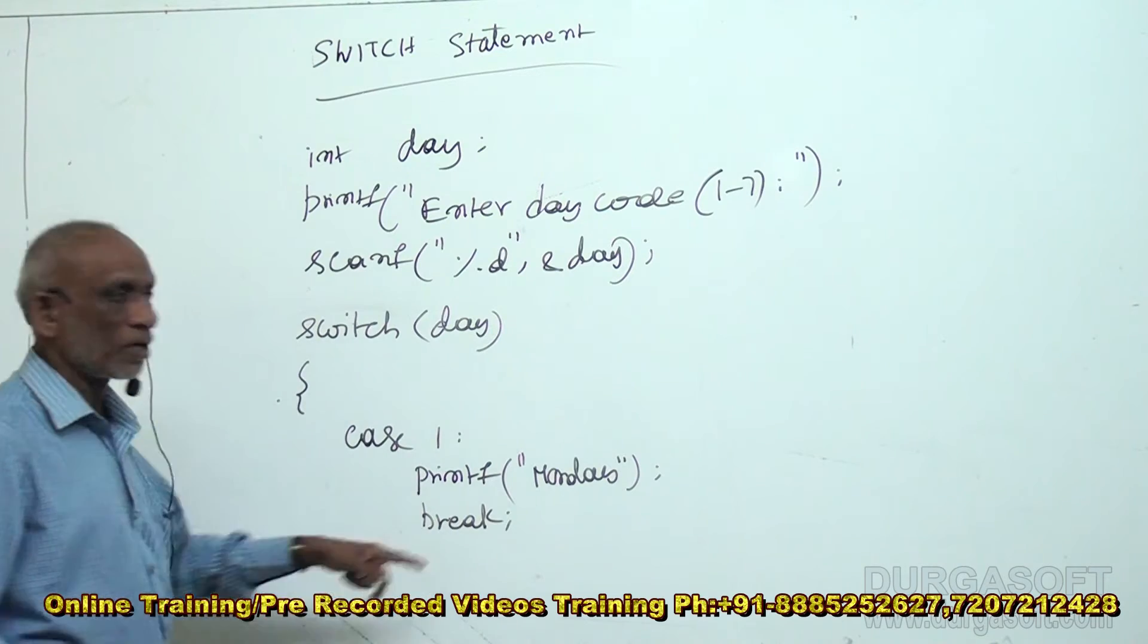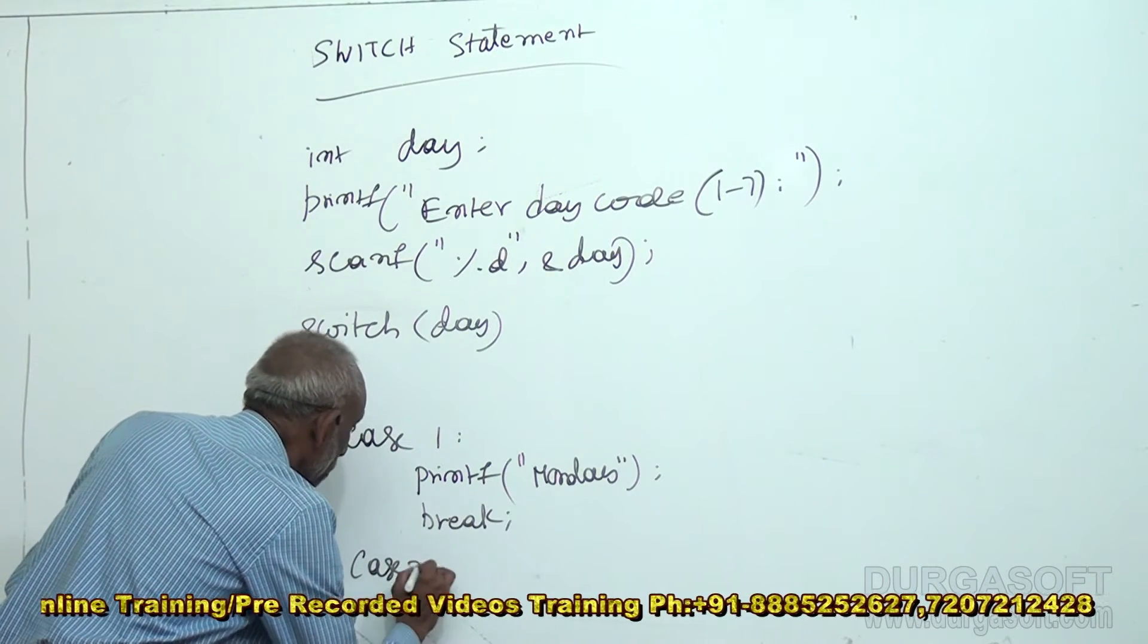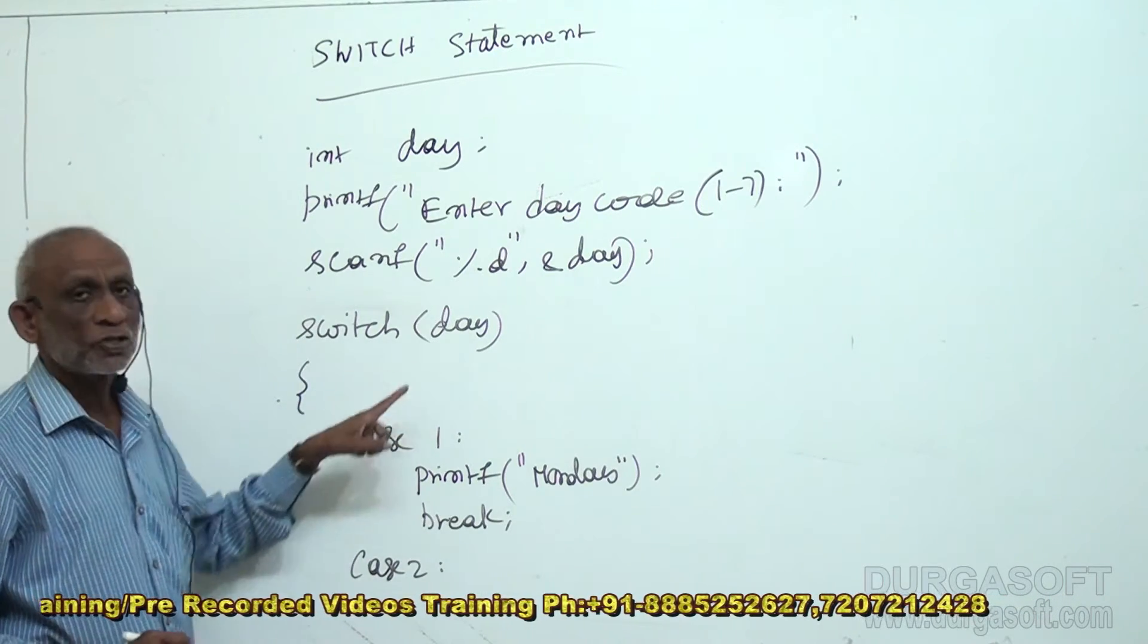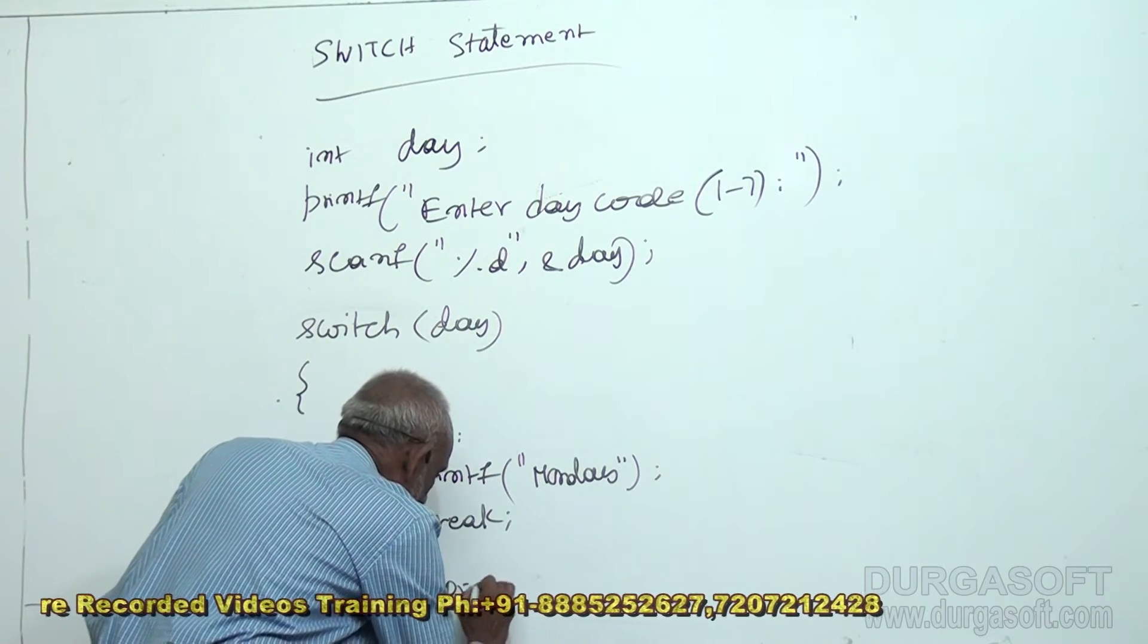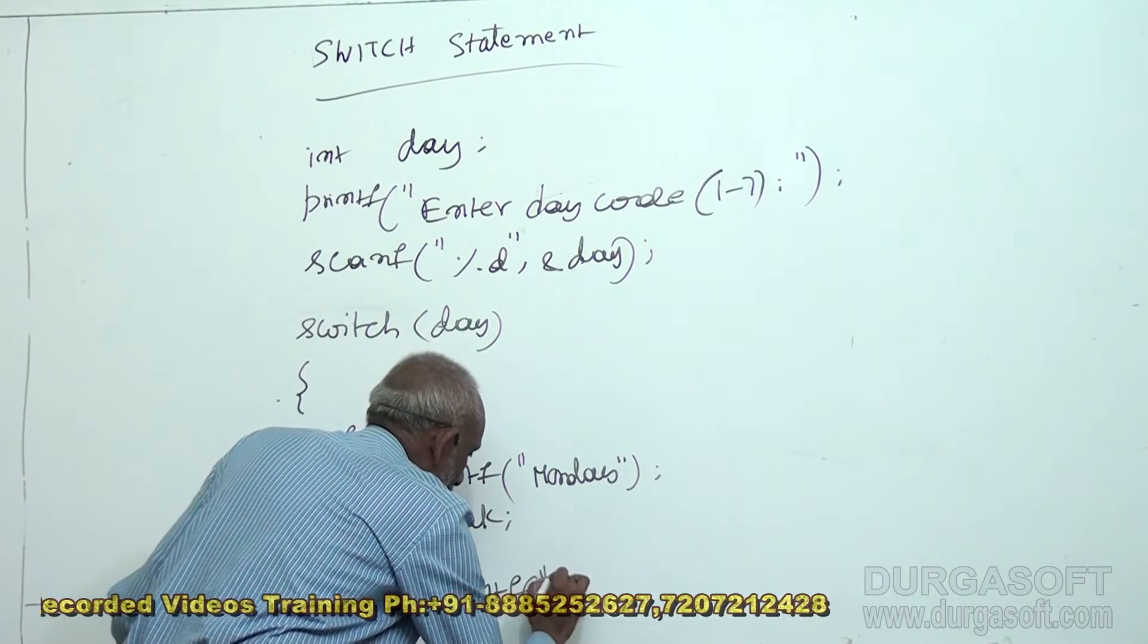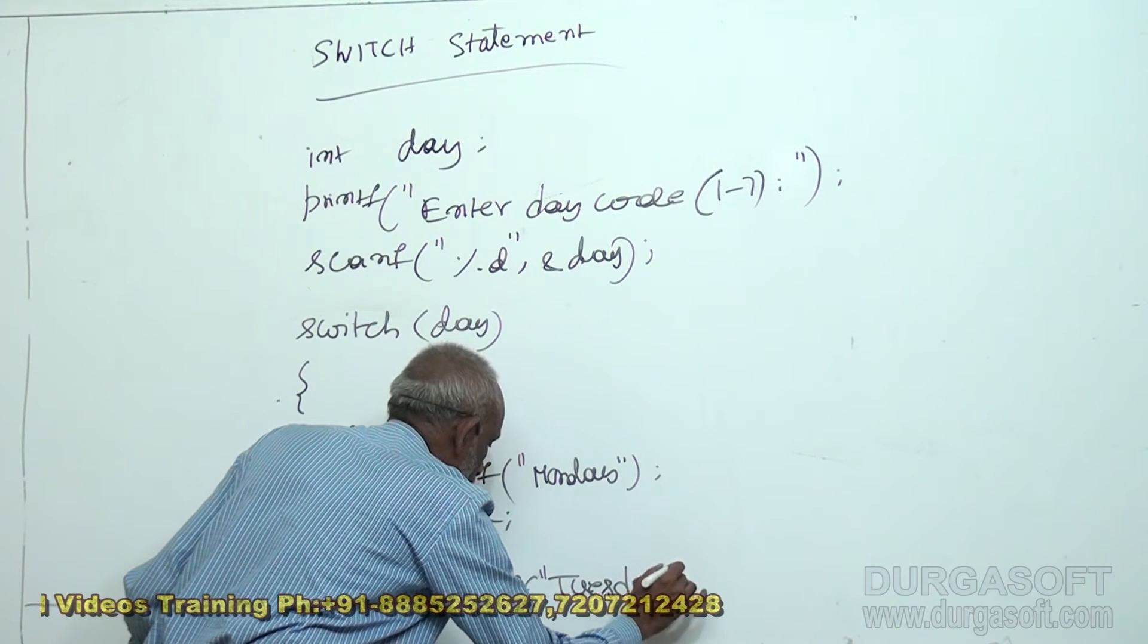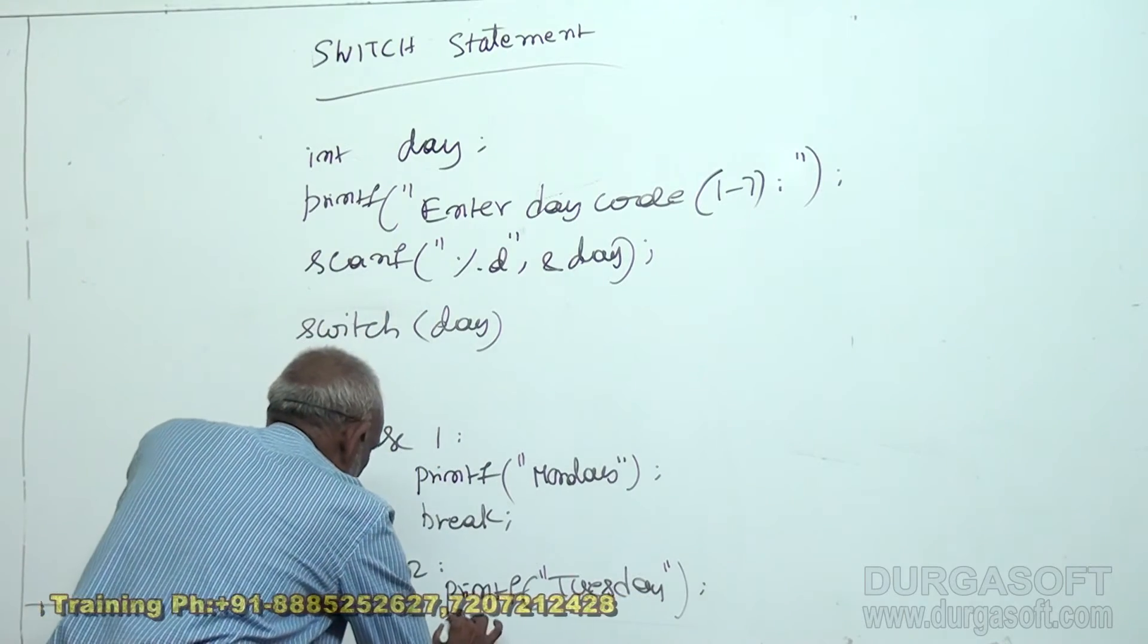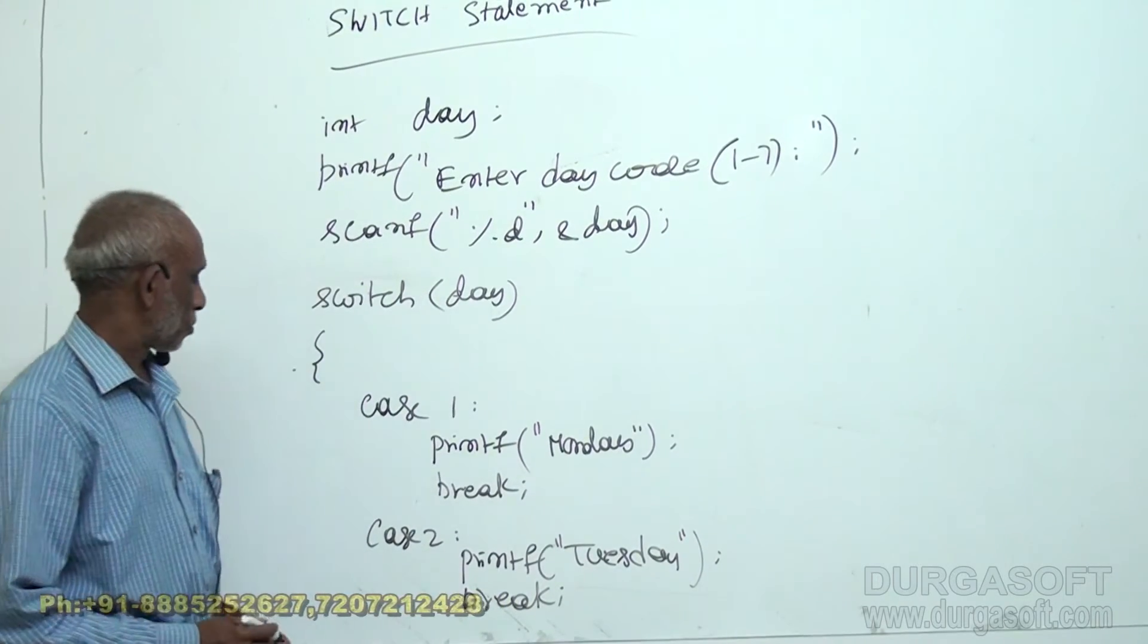I will explain later what is this break. Next, case 2. Case 2 means day code is 2. 2 means Tuesday. So, printf, Tuesday. Break.